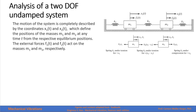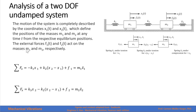In this slide we have an example of a 2 Degrees of Freedom Undamped system. The motion of the system is completely described by the coordinates x1 and x2, which define the position of mass 1 and mass 2 for all times. We have the external forces f1 and f2 that act on mass 1 and mass 2 respectively. This is the free body diagram of the masses, and let's do the equation of motion.